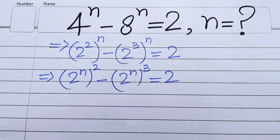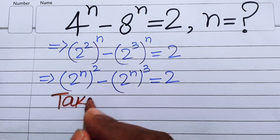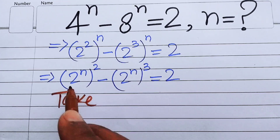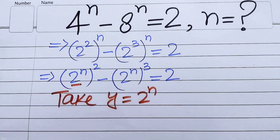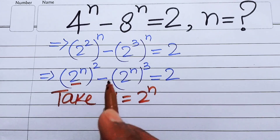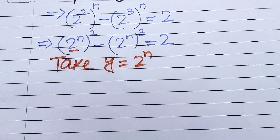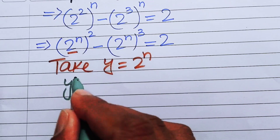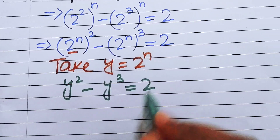In the next step we convert this exponential equation into a cubic form. We set 2 to the power of n equals y. We substitute this value into the above equation and get y squared minus y cubed equals 2.